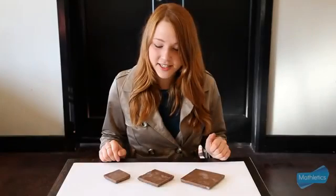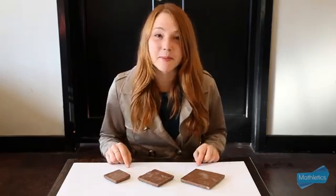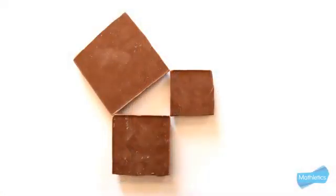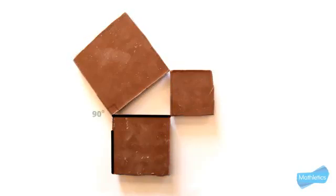Before we make this decision let's see what we can find out about these particular blocks of chocolate. Each of these blocks is a square so the sides have the same length and the angles are all right angles, and these lines here are straight and perpendicular so this angle must be 90 degrees. That means the space in between the blocks is a right angle triangle.